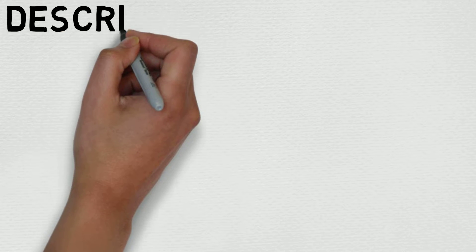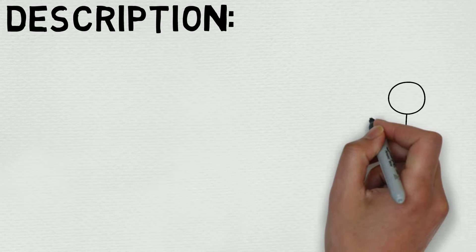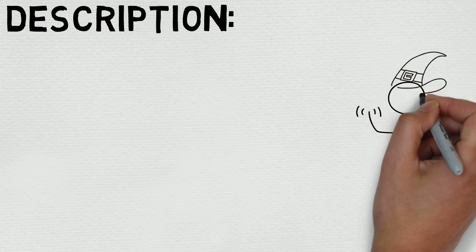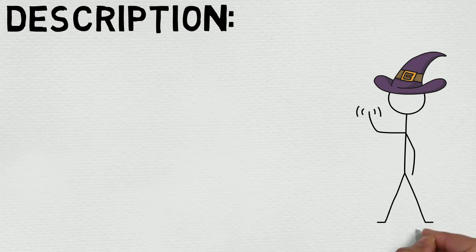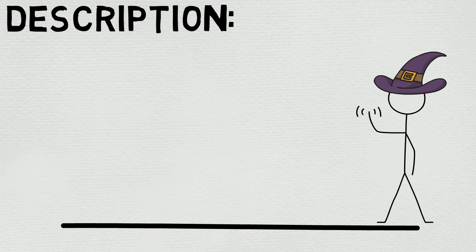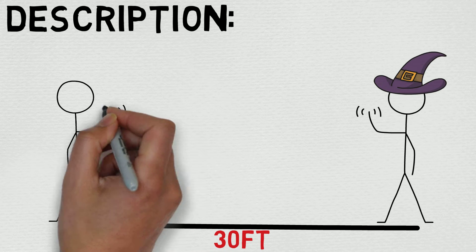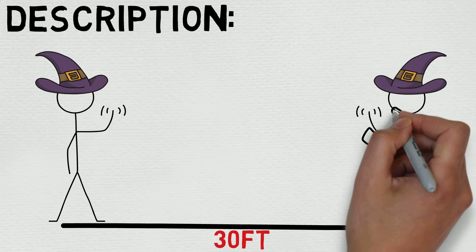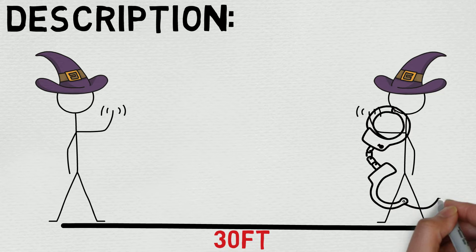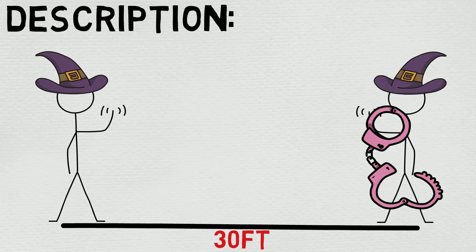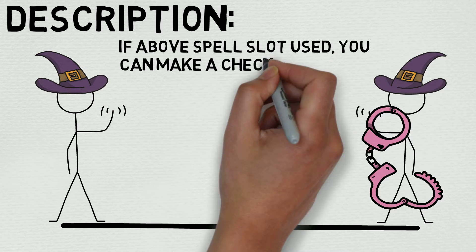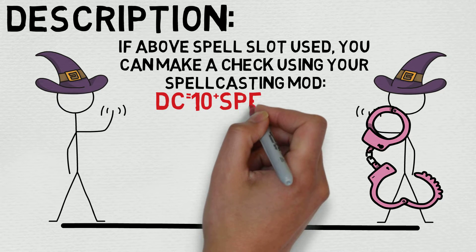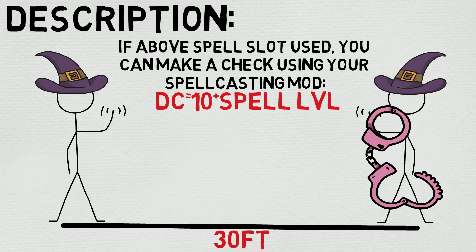Now let's take a look at its full description. Choose one creature, object, or magical effect within range. Any spell of third level or lower on the target ends. For each spell of fourth level or higher on the target, make an ability check using your spellcasting ability — the DC equals 10 plus the spell's level. On a successful check, the spell ends. At higher levels: when you cast this spell using a spell slot of fourth level or higher, you automatically end the effects of a spell on the target if the spell's level is equal to or less than the level of the spell slot you used.